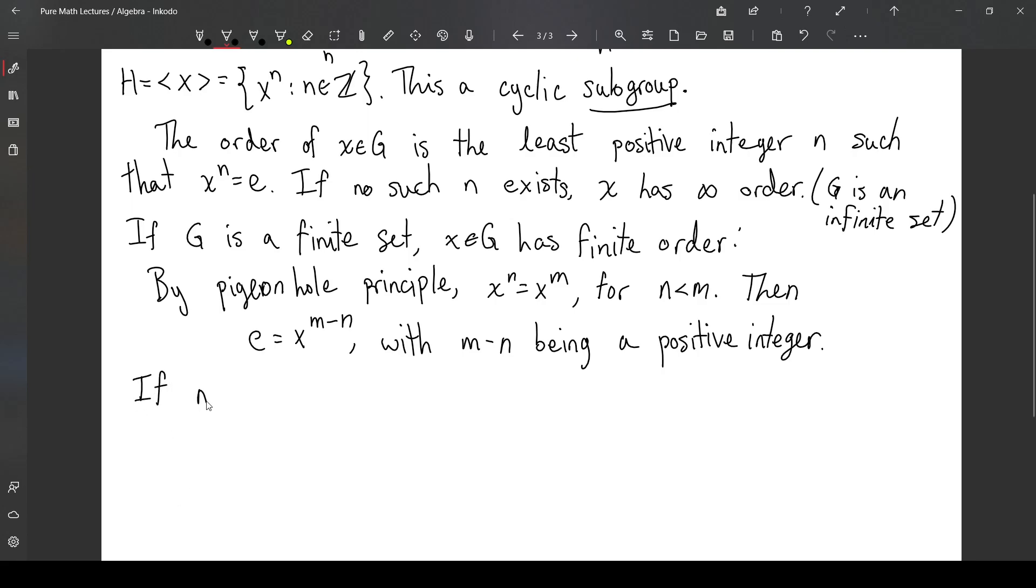Now, if n is equal to the order of x, then the size of the cyclic group generated by x is exactly n, and this set is of course just e and then the powers of x up to n minus 1. All of these powers are equal, the powers x to the i, x to the j for i and j for 1 through n minus 1 are distinct.